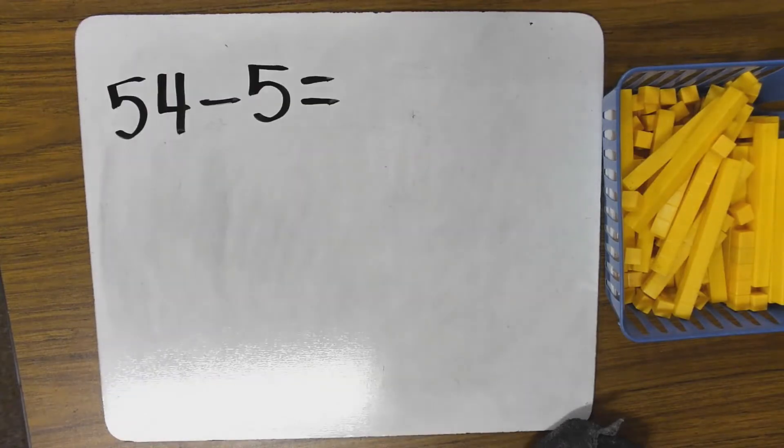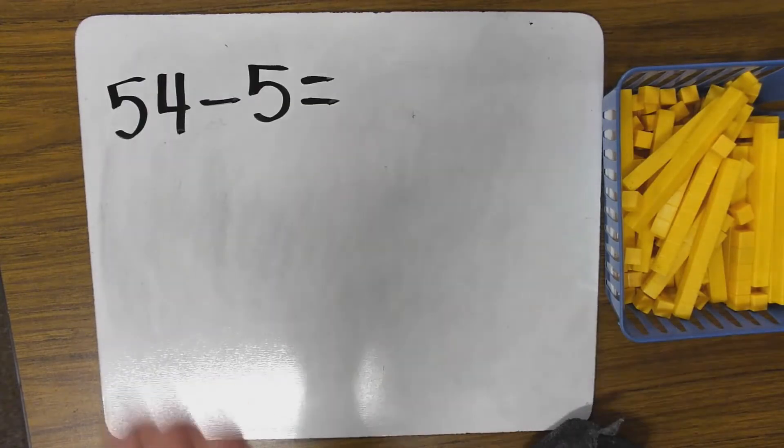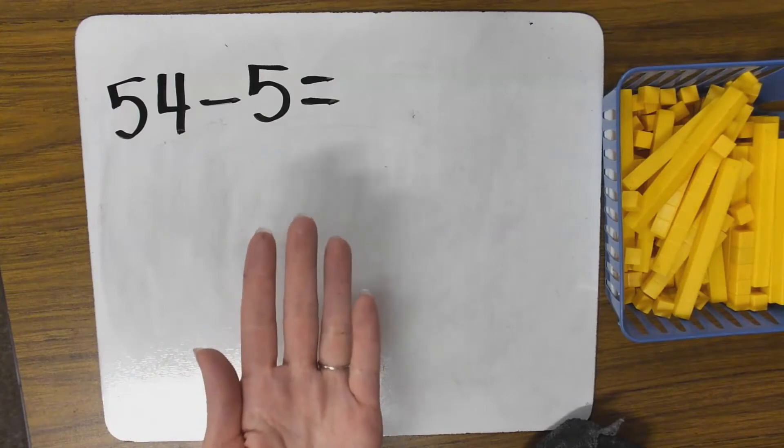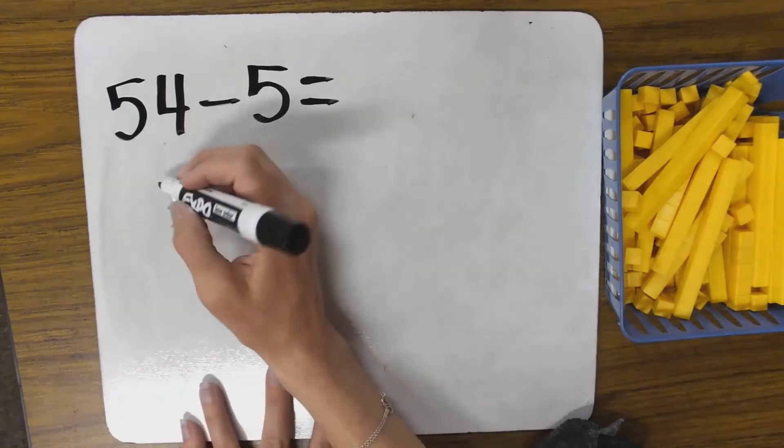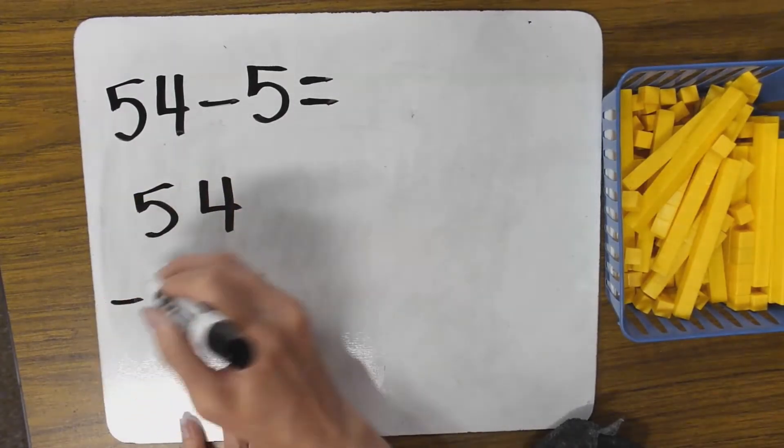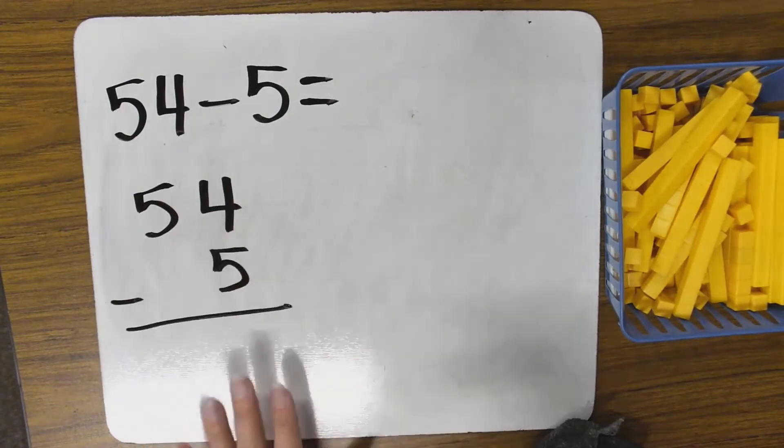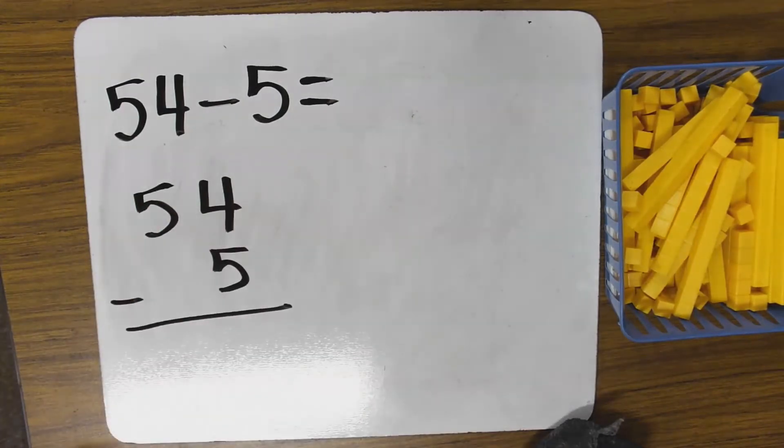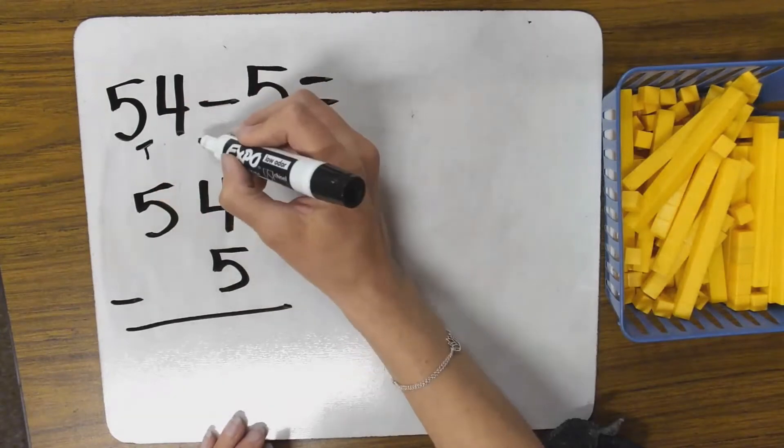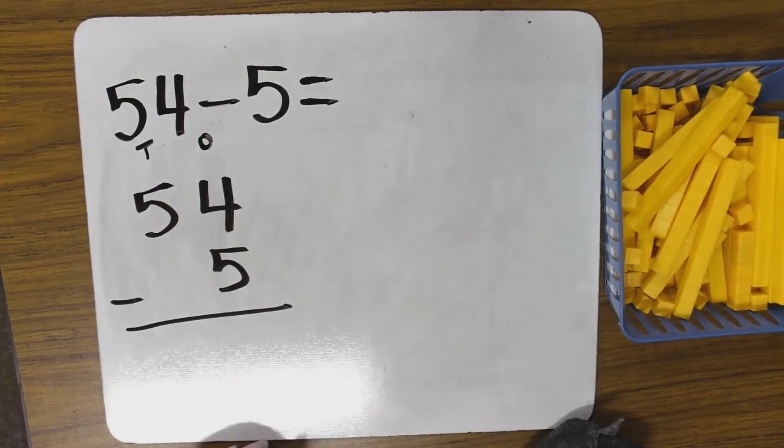You're gonna need your whiteboard materials, a marker, a board, and some kind of eraser, and if you'd like you can use some base ten blocks. So let's start with this first problem 54 minus 5. So we are gonna do some vertical subtraction 54 minus 5. Now notice I spaced the numbers out a little bit. These will be my tens, these will be my ones.